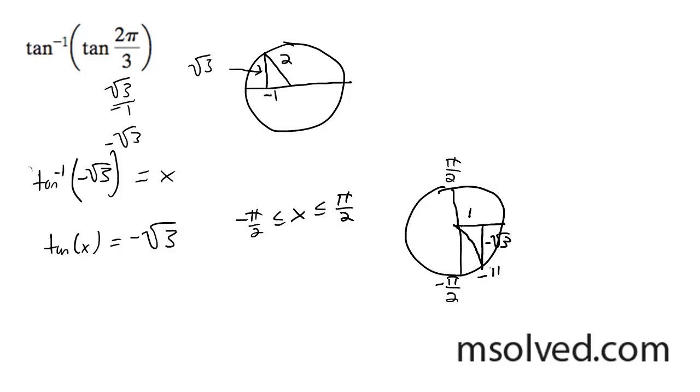So in this case, it has to be down here, because you have to be within your bounds. So the solution to this answer, it's a little bit of a trick, but it's going to be negative π over 3. It doesn't spit out 2π over 3, it spits out negative π over 3, because of our bounds. That's it.